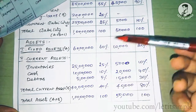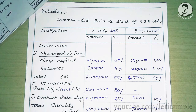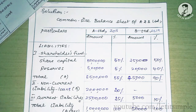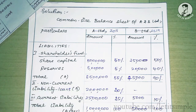So this is how we prepare the common-size income statement as well as the common-size balance sheet. If you want to see the content in PDF format, the link is in the description — you can download the PDF for further references. I hope you have understood the concept. If you find this useful, share it with your friends and subscribe to the Melingkambro channel. Thank you for watching.